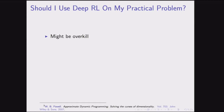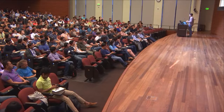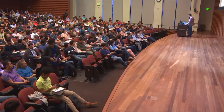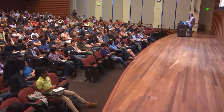If you have a problem where reinforcement learning might be relevant, the answer to whether you should apply it might be no — it might be overkill, especially deep reinforcement learning. These are fairly new techniques that won't work out of the box very well; they require a lot of tuning. It might be worth investigating other methods first, since these techniques aren't that well established at the moment.